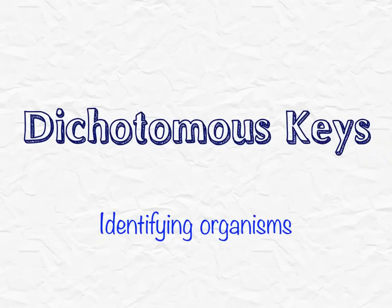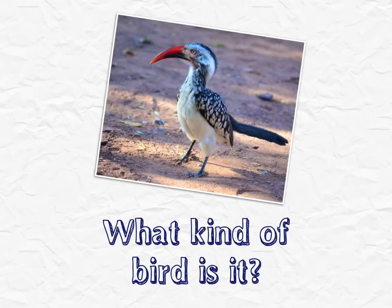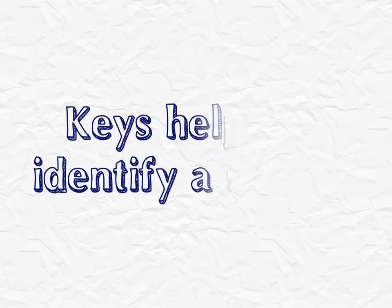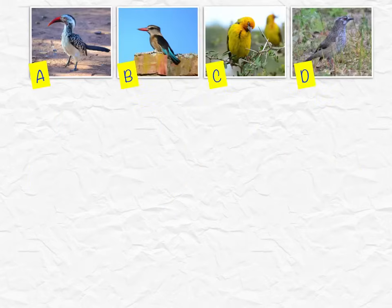Dichotomous keys are something you'll find yourself using a lot in biology. A good example of how they are used is maybe you're looking at a picture of an organism and you want to find out what it is. Keys help you to identify a species. Here's an example of how a key might work.